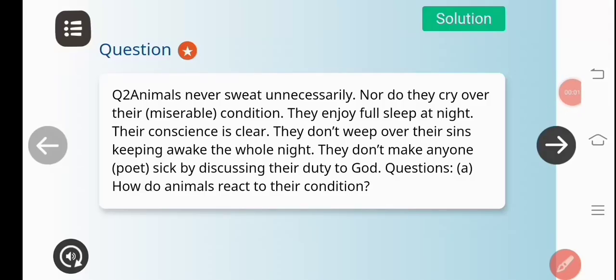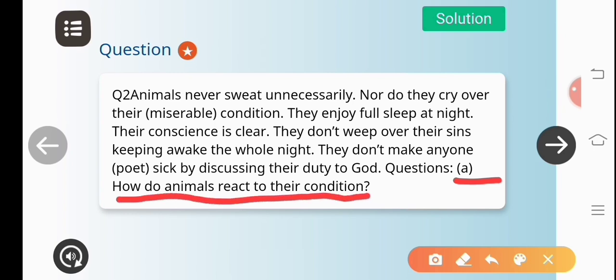So guys, this was the poetic device or literary device which we have read in this chapter. Now we will go and see the exercises of this chapter. I will see the question answer exercise of the chapter Animals. The question here is: How do animals react to their conditions? The answer would be: Animals never sweat unnecessarily, nor do they cry over their miserable condition. They enjoy full sleep at night. Their conscience is clear. They don't weep over their sins, keeping awake the whole night. They don't make anyone, especially the poet, sick by discussing their duty to God.